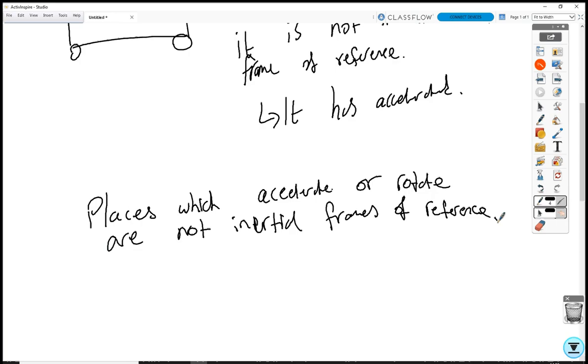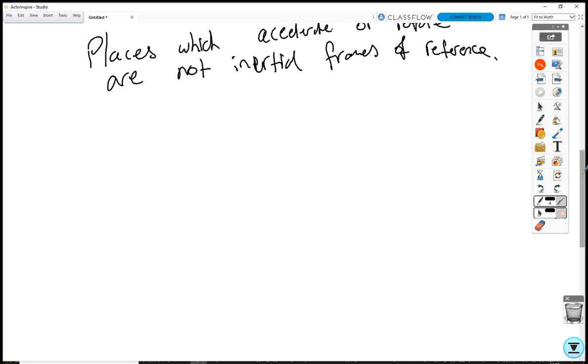But for us on the surface of the Earth, watching those muons, we're in a non-inertial frame of reference. So we've got an observer on the ground, we have some mountain. At the top of a mountain, we have a lab, so we can take measurements at that lab. We have muons moving down.